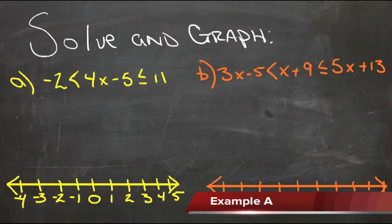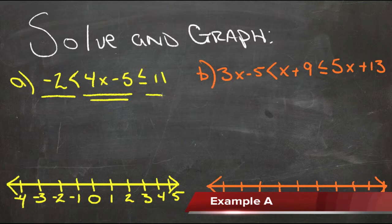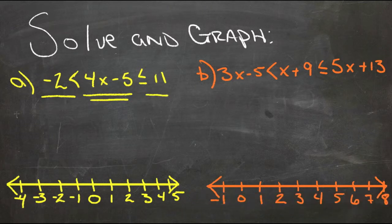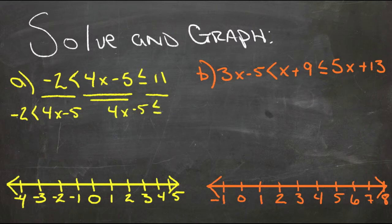What we have here is negative 2 is less than 4x minus 5 and 4x minus 5 is less than or equal to 11. So if we write those out individually, negative 2 is less than 4x minus 5 and 4x minus 5 is less than or equal to 11.